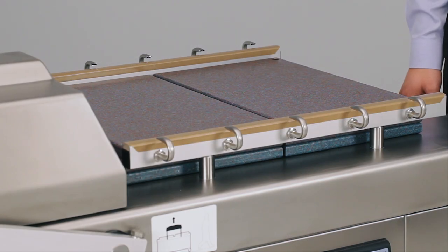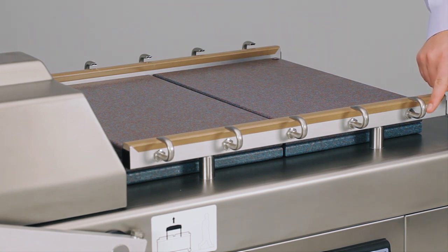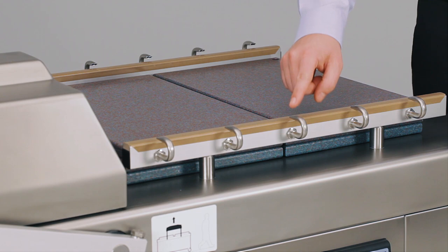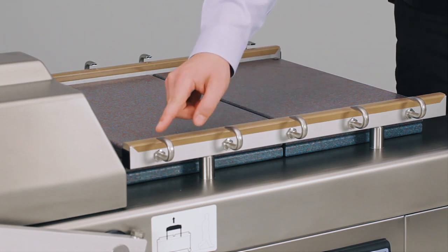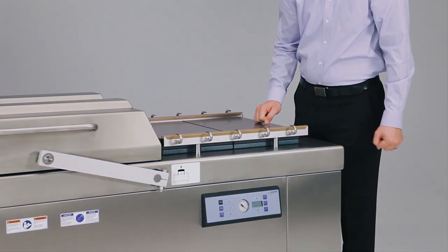An optional feature on these machines is the utilization of gas flushing or modified atmosphere packaging. This is denoted by these stainless steel nozzles in which you would align your pouch over the bar to get optimal gas flushing.